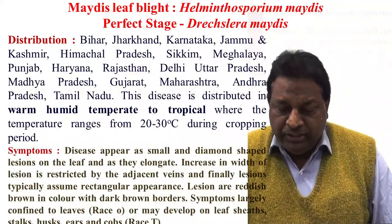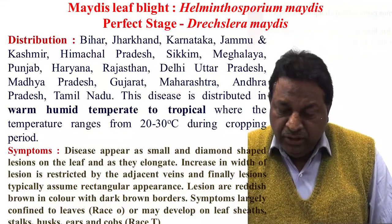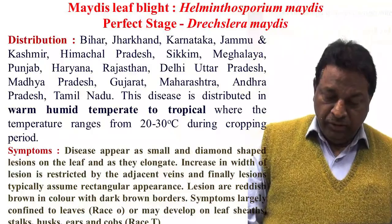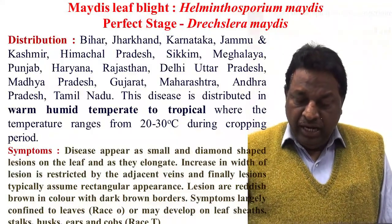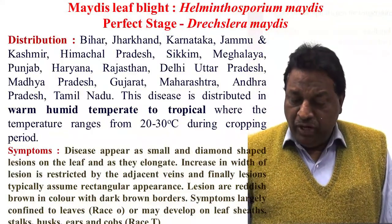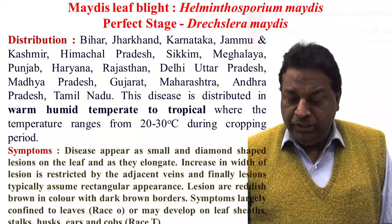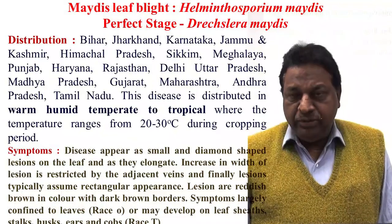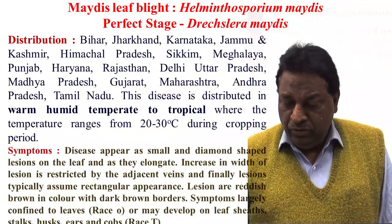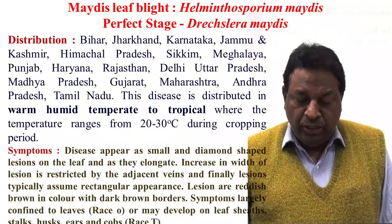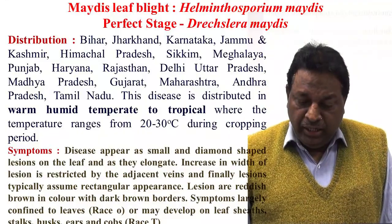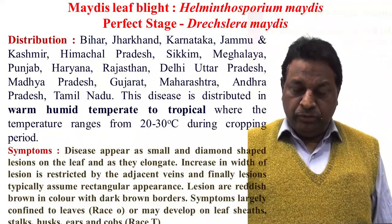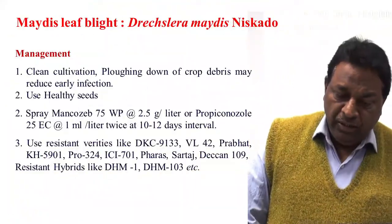The disease is prevalent in warm, humid, temperate to tropical areas with high relative humidity and warm weather of 20 to 30 degrees Celsius, which favors development of the disease. The pathogen survives in plant debris. Collateral hosts like sorghum, teosinte, and other grass plants are also reported as collateral hosts.